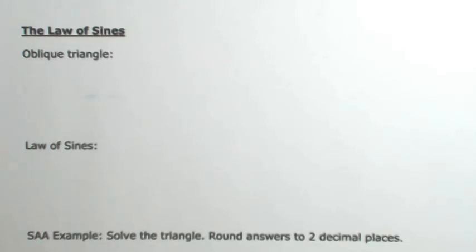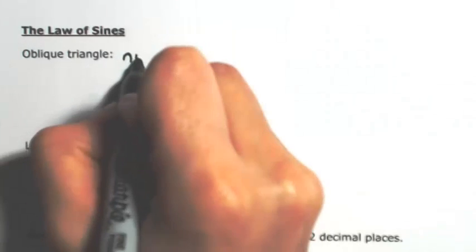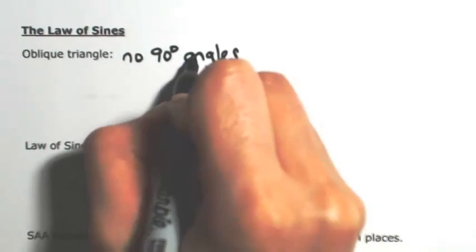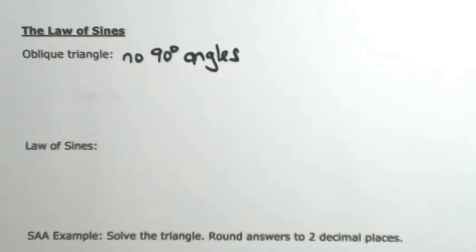Let's take a look at how to solve for an oblique triangle. An oblique triangle is a triangle that does not contain any 90-degree angles. So it's a non-right triangle.